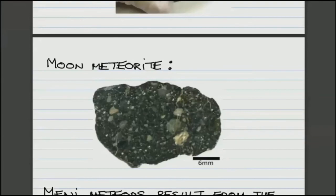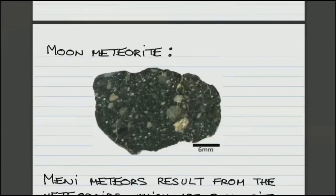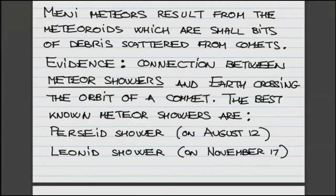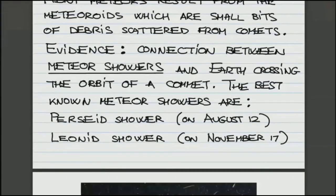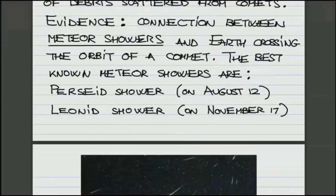That's not the only source of meteorite. Many are debris scattered from comets. So what is the evidence for that? It is the connection between so-called meteor showers and the Earth crossing the orbit of the comet. There are two best-known meteor showers. One is in the summer, so-called Perseid shower on August the 12th.